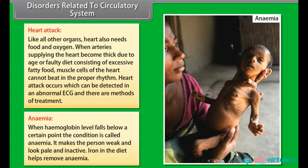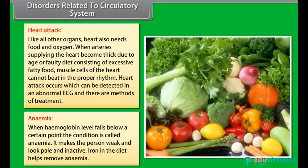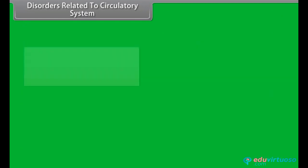Anemia: when the hemoglobin level falls below a certain point, the condition is called anemia. It makes the person weak, pale and inactive. Iron in the diet helps remove anemia.